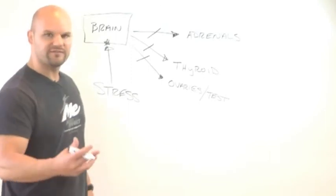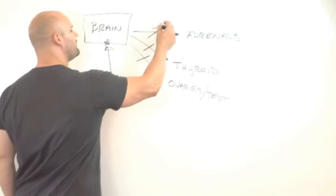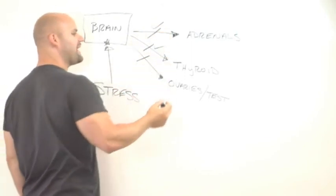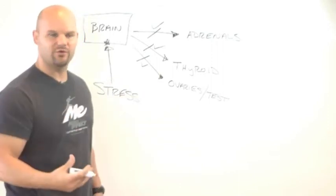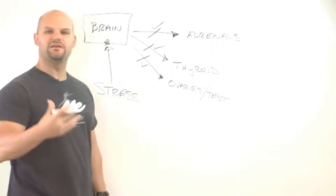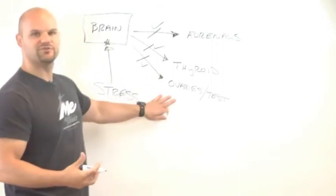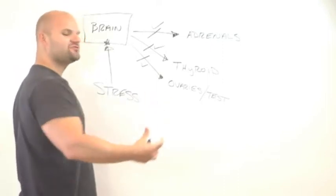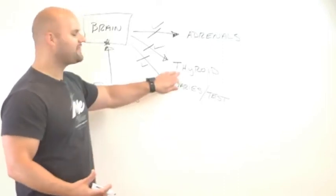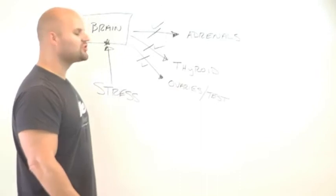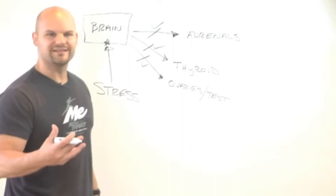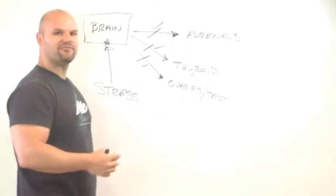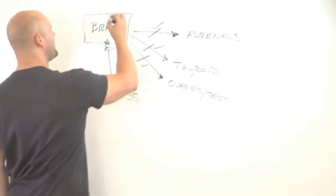the adrenals no longer work. The thyroid doesn't function okay. And their menstrual cycle, or their libido if they're a man, starts to become dysfunctional. They can't produce enough testosterone anymore. Estrogen and progesterone become affected. Thyroid hormone is no longer turning on the way it should. And you can no longer respond to stress the way you once did.